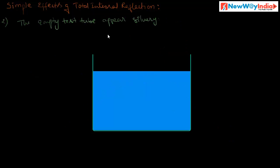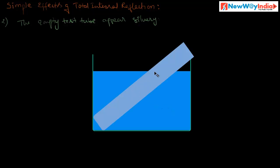The second effect of total internal reflection: an empty test tube appears silvery. That means when an empty test tube is held obliquely in water and viewed from the top of the water surface, it looks silvery. This happens because of total internal reflection.